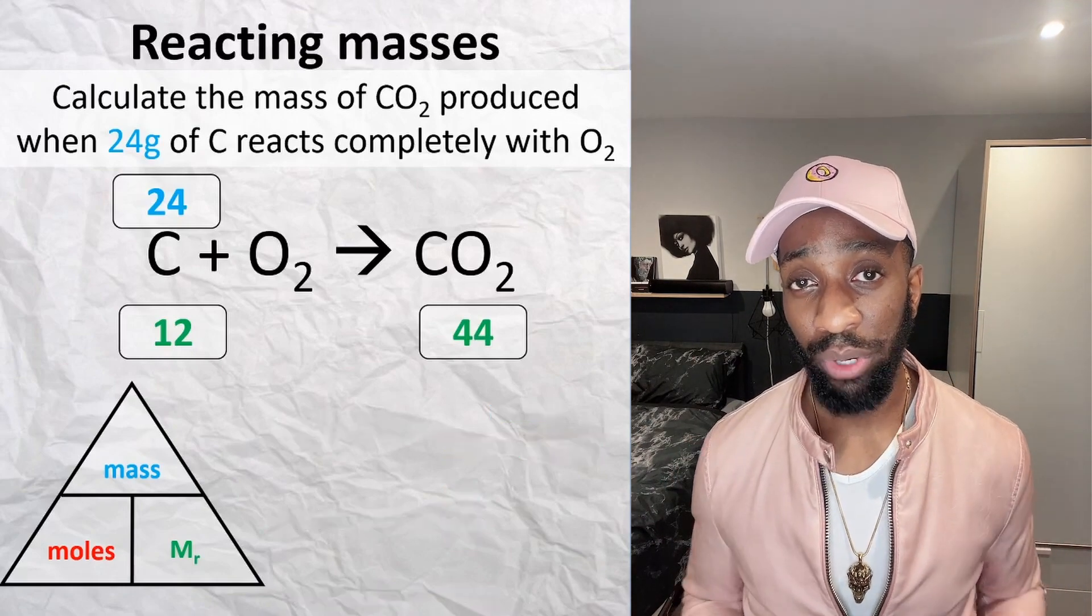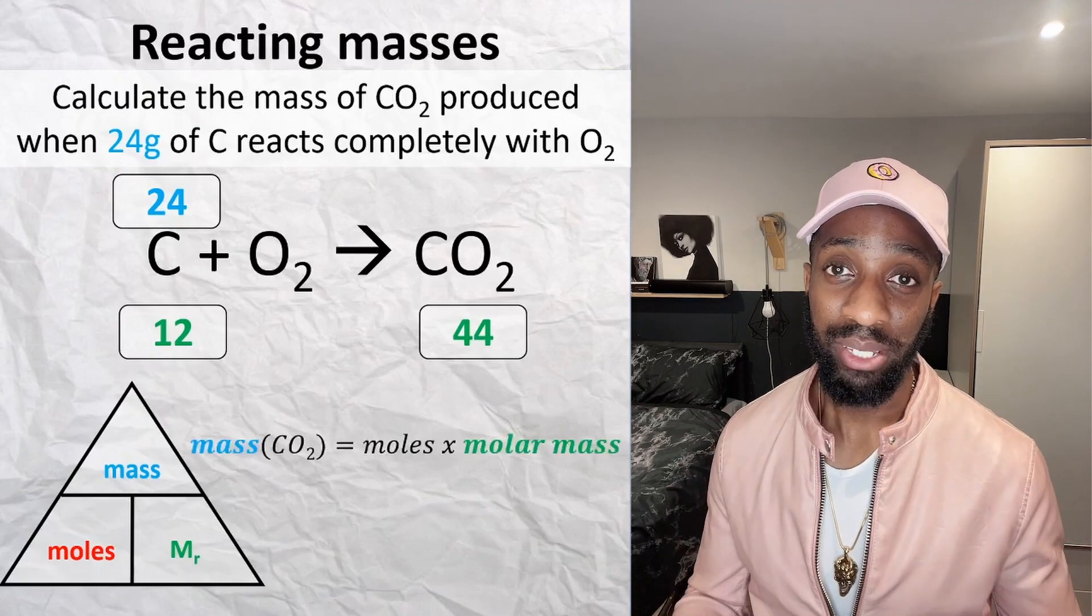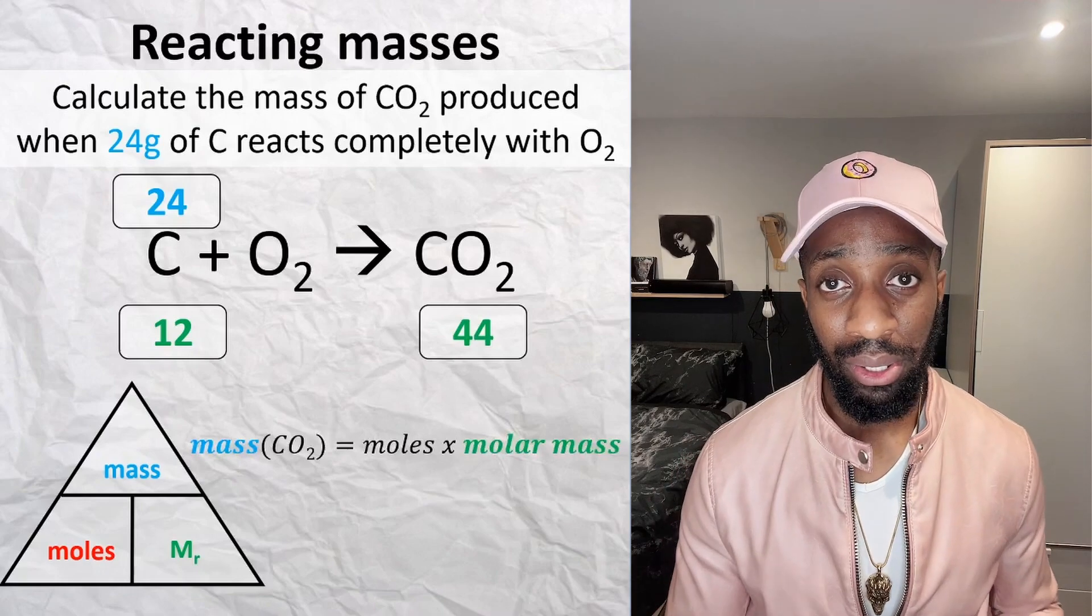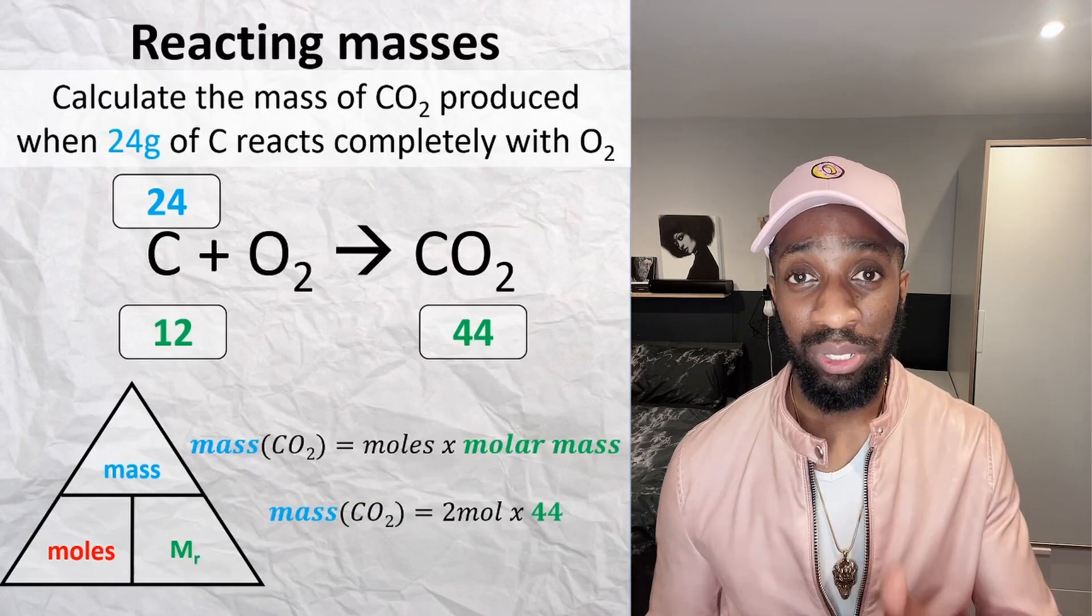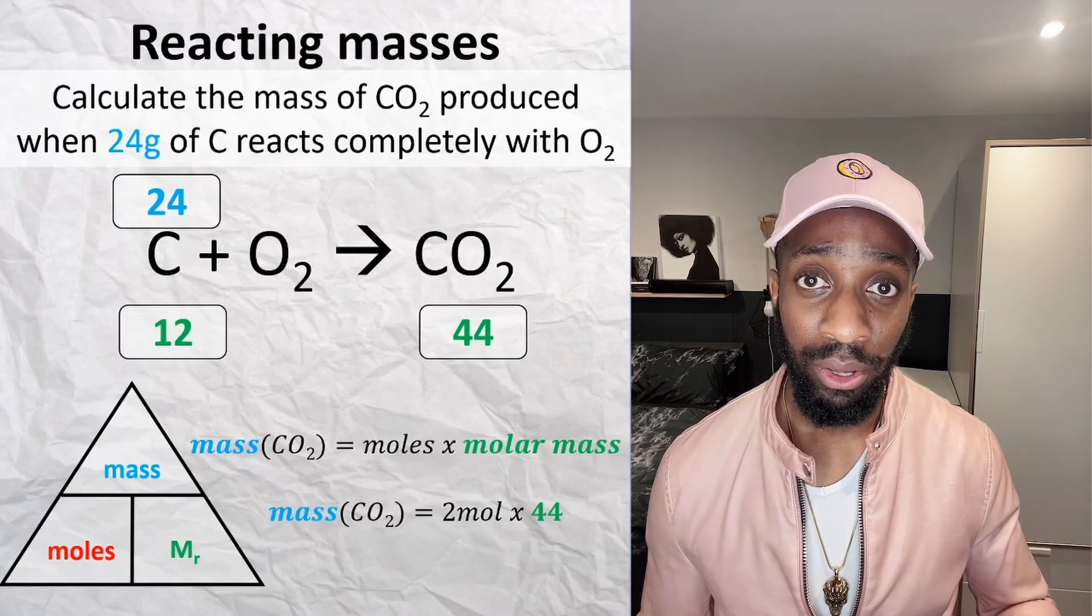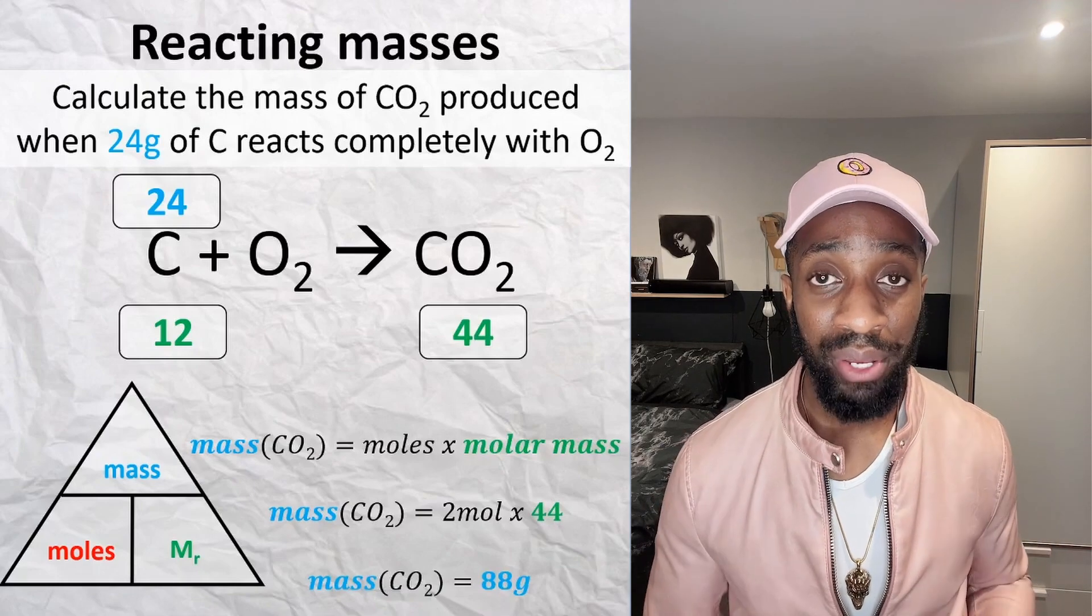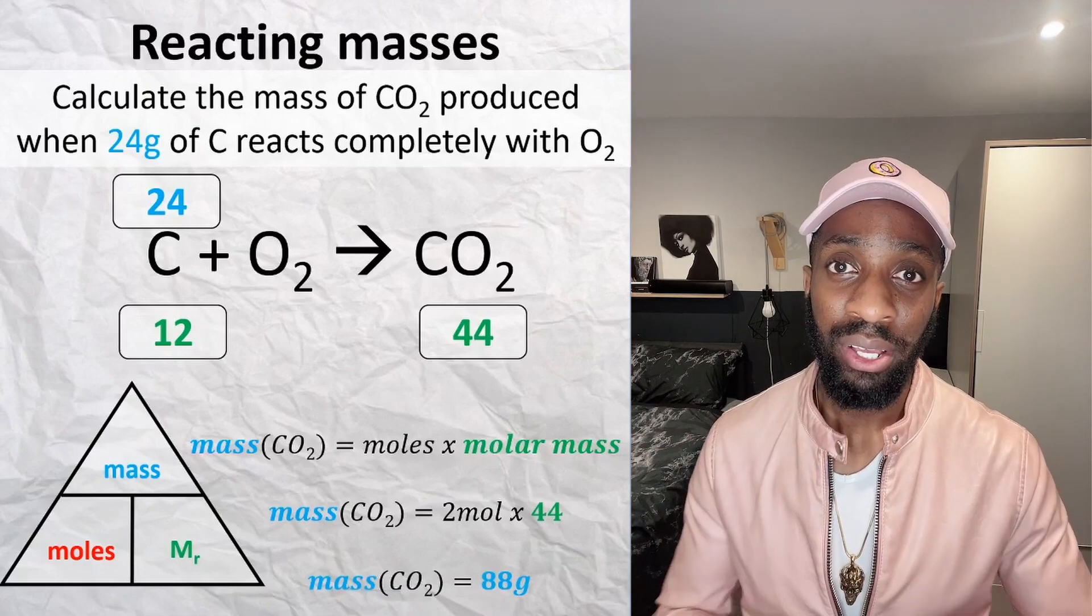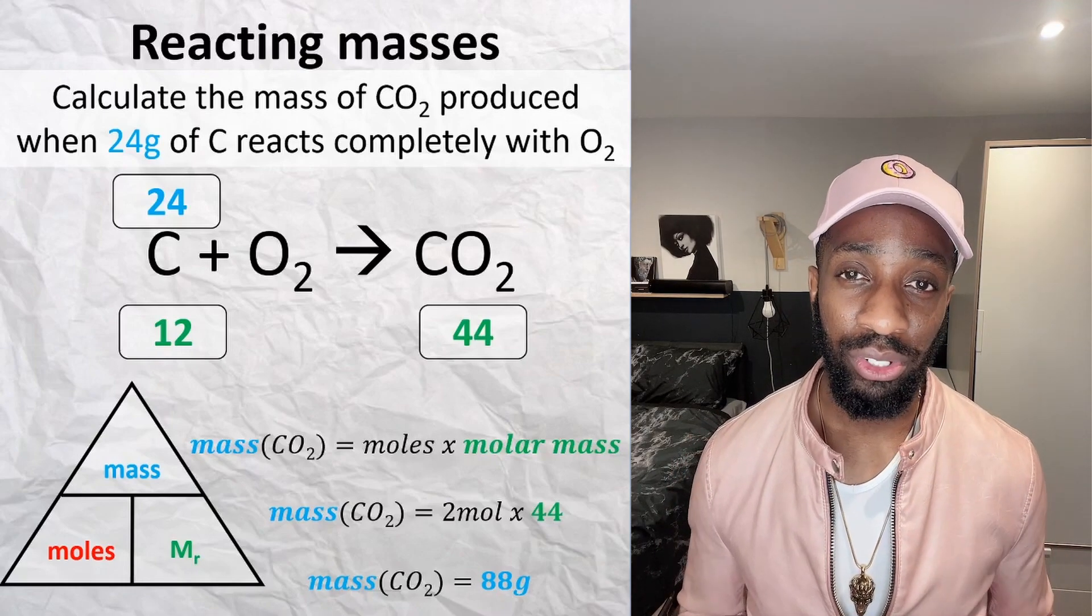And remembering from the question, we're trying to work out the mass of carbon dioxide produced. Mass is moles times molar mass, which means that the two moles that we worked out in the previous example, we multiply that by the molar mass of carbon dioxide, which is 44. This means that we have 88 grams of carbon dioxide produced when we react 24 grams of carbon completely with oxygen.